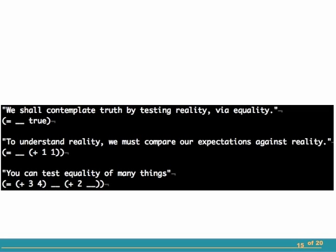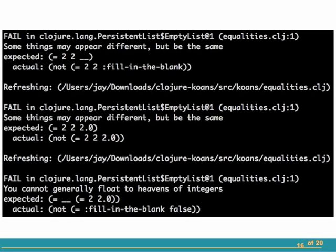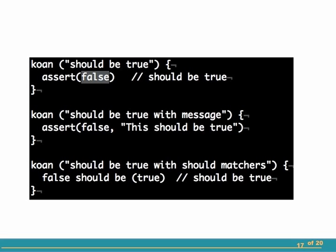The concept worked well enough for Ruby that others have borrowed it for their own favorite languages. Here you see a snippet from the Clojure koans and some failing tests from those koans. Here's a bit from the Scala koans. What I like about the Clojure and Scala setups is they include all the jars you need to run them right out of the box — all you need is a Java Virtual Machine. The Clojure and Scala setups also monitor the test files as you save them and automatically rerun them, which I think is a nice touch.